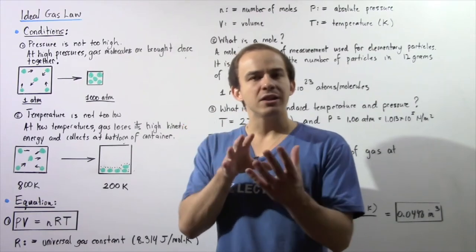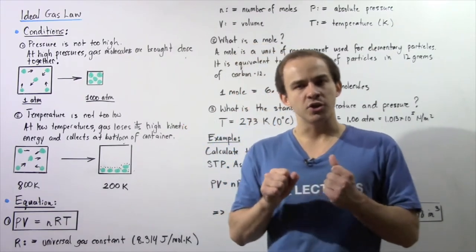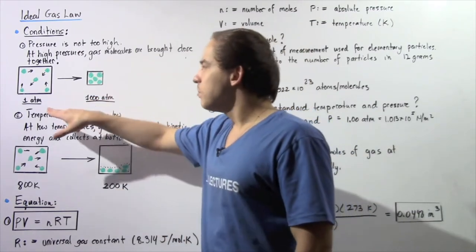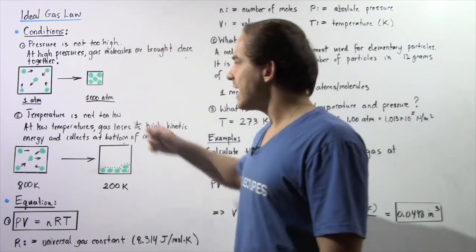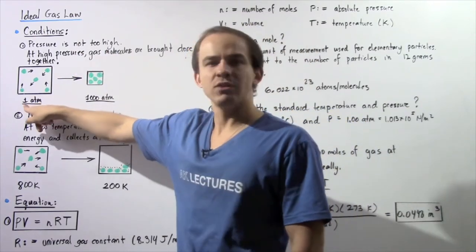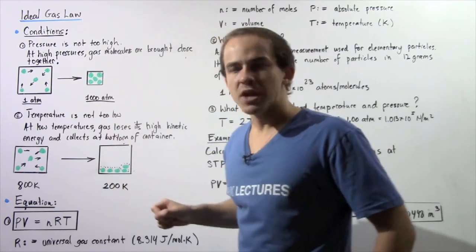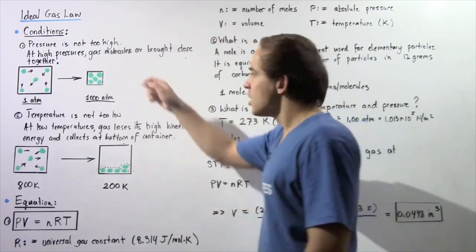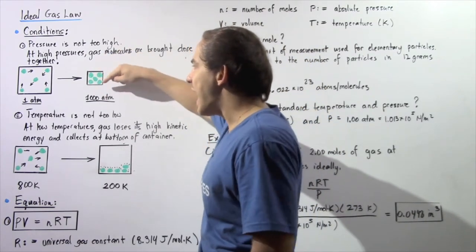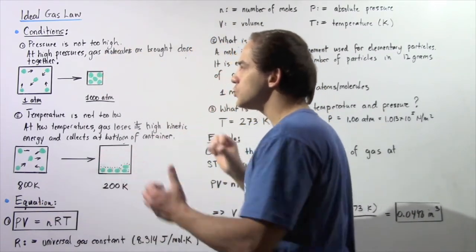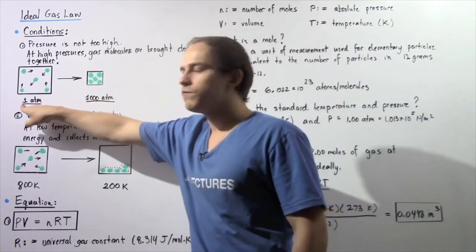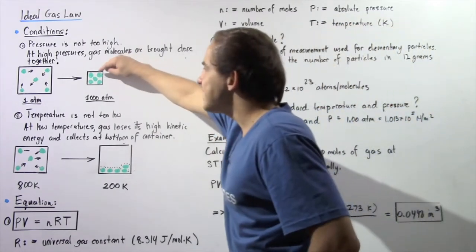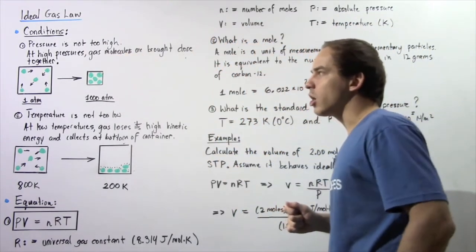And what happens when atoms or molecules are very close to one another is a change of phase takes place. Let's suppose that we begin with a container of gas molecules or atoms that is at one atmospheric pressure. So if we decrease the volume of our system, our container, what happens is the molecules or atoms are brought very close to one another. And if we go from one ATM to 1000 atmospheric pressure, notice how close our atoms or molecules are.